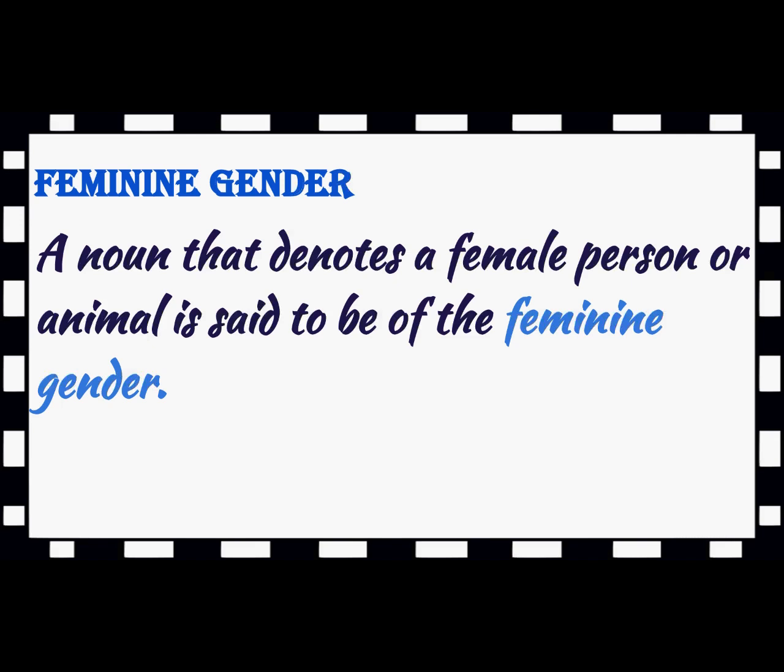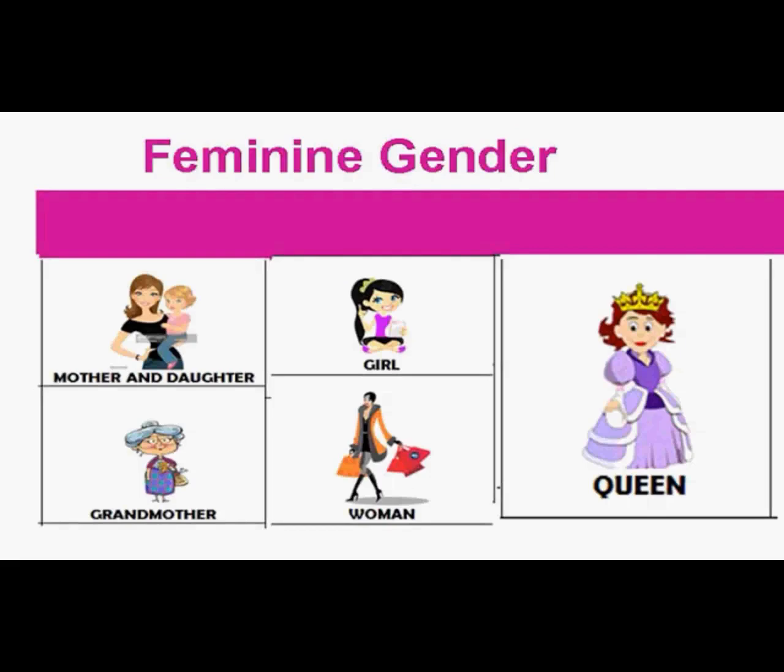Now coming to feminine gender. A noun that denotes a female person or animal is said to be of the feminine gender. Can you see here? A queen, a woman, girl, mother and daughter, grandmother — so all these nouns come under feminine gender.